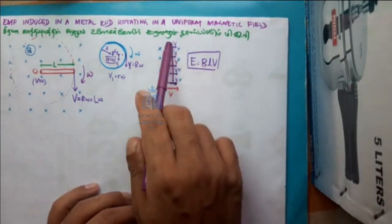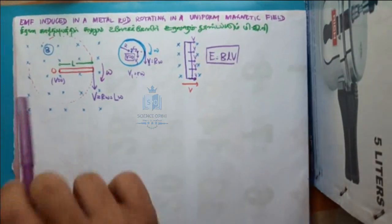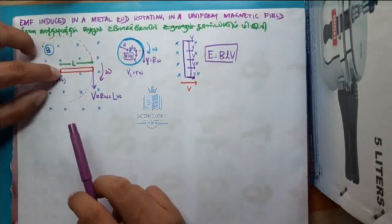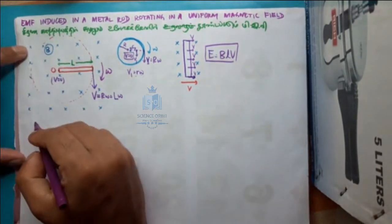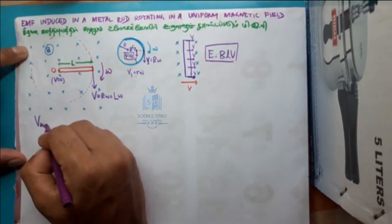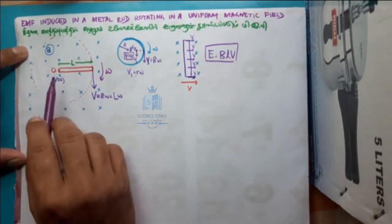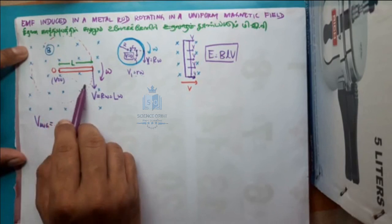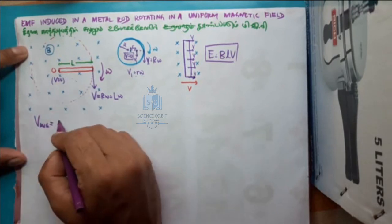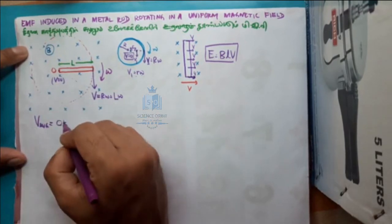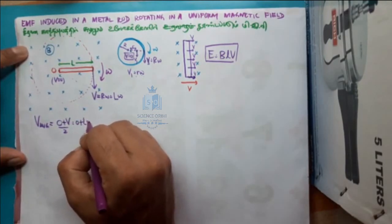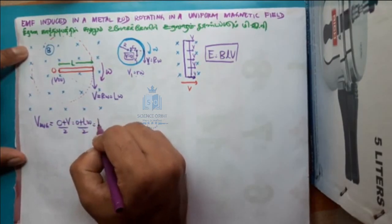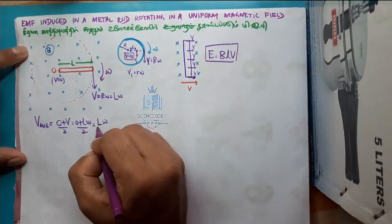Here the problem is that one point is at zero velocity and the other point is at another velocity. So in this case, we find the average velocity. Since velocity is uniformly distributed, the average is (0 + Lω) / 2, which equals Lω / 2.